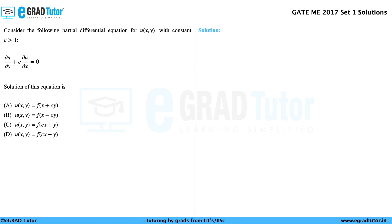Consider the following partial differential equation for u(x, y) with constant c greater than 1: ∂u/∂y + c·∂u/∂x = 0. The solution of this equation is: